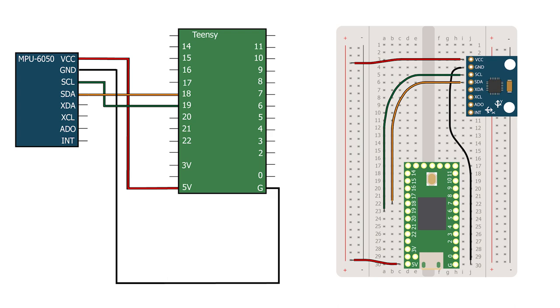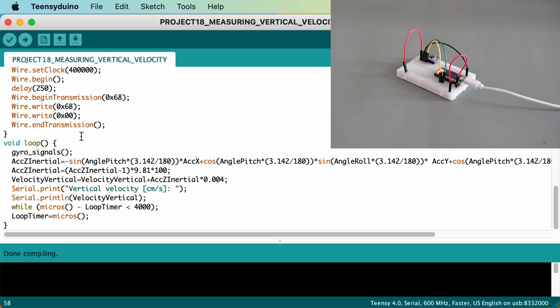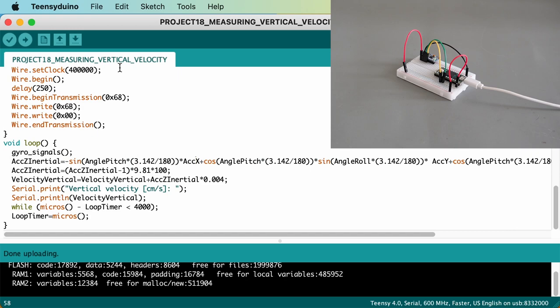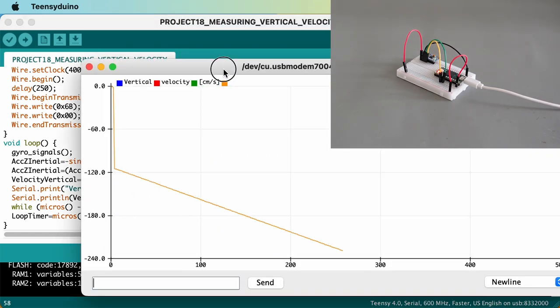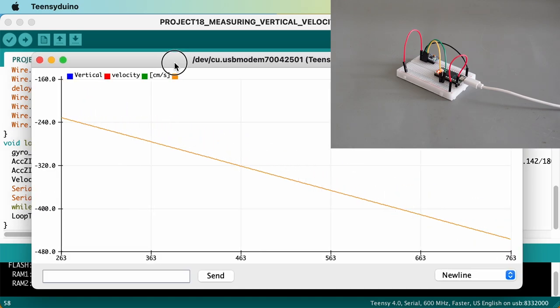Connect the TNC with the MPU6050 as seen in part 4, upload the new code to your TNC and open the serial plotter. You immediately notice that the resulting measurements show a non-zero vertical velocity, even though the sensor lies flat on the table and is not moving.